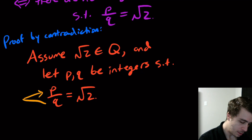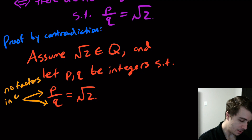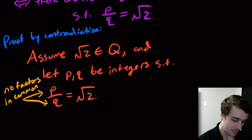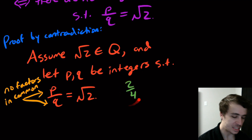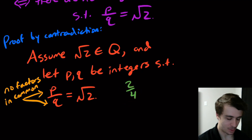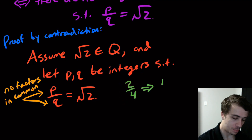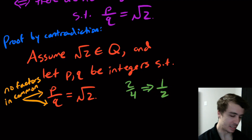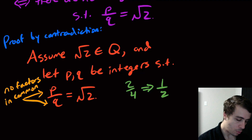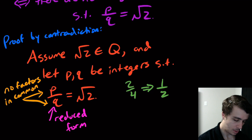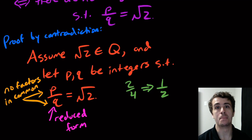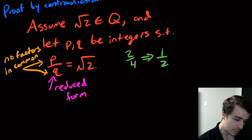What we're going to additionally assume is that these two numbers have no factors in common — meaning the fraction is in reduced form. For example, two over four has a factor of two in common, so it reduces to one over two, which can't be reduced further. So we assume p over q is already in reduced form and we can't divide anything out of both numbers simultaneously.